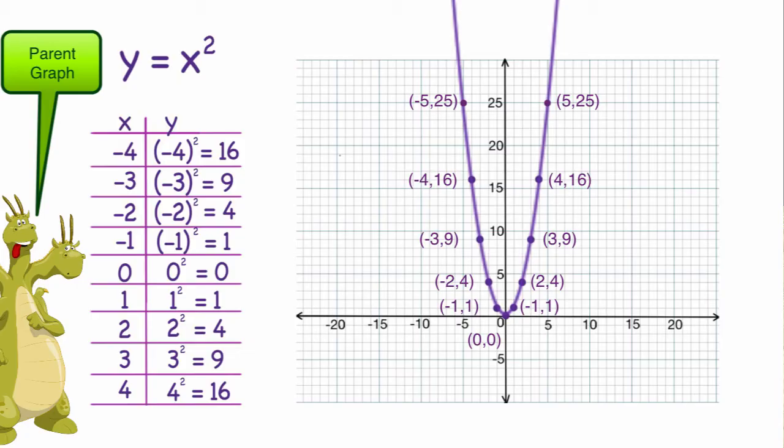Because sometimes your parabola will be skinny. Sometimes it will be really, really wide. Sometimes it can be facing a different direction. And sometimes it can be shifted to the right or shifted to the left. So all these different ways that your parabola can be changed, that means that your formulas are going to look different as well.